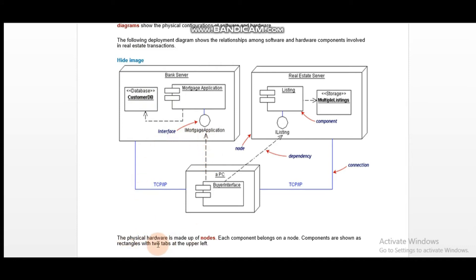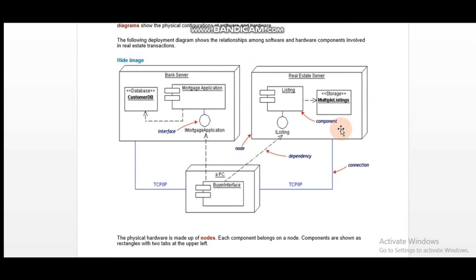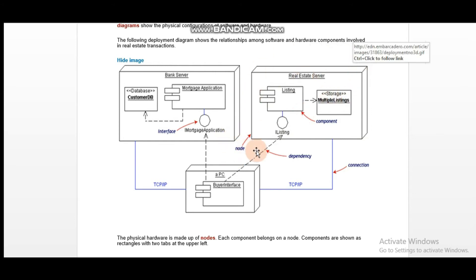Through definition, the physical hardware is made up of nodes, which is our physical hardware. Now, node — you can see here it is written 'node' — we are having here a shape, a rectangle that is something like a 3D rectangle. This rectangle is basically a node. This is physical hardware, which is also a component. We have said that it is a code module, so this code module is a component.